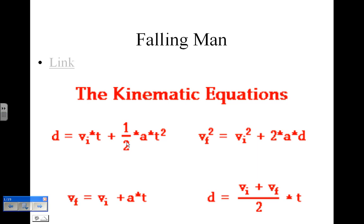One-half is one-half, a is acceleration, and t again in this equation is time squared. Each of these equations has a different use, but they all come from the same place. And if and when you get to a physics class, you'll probably work with these quite a bit more.